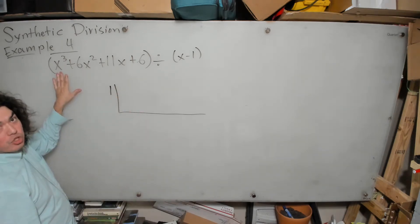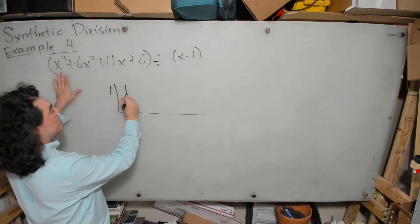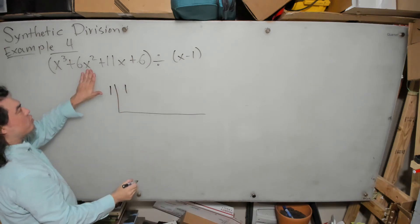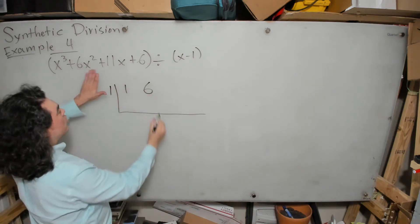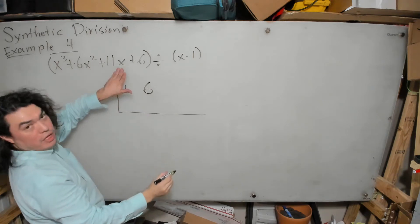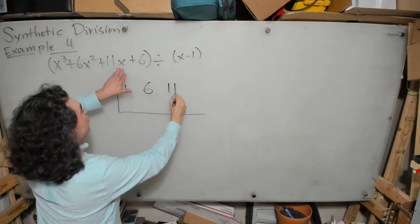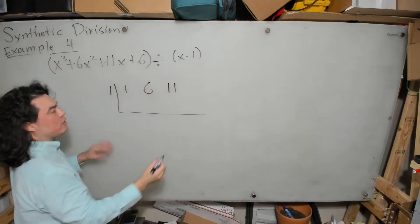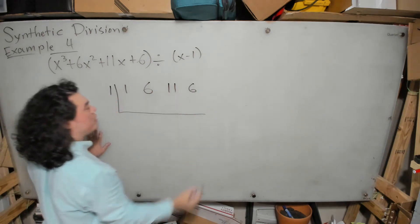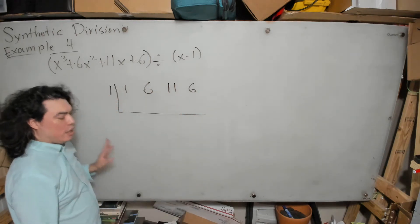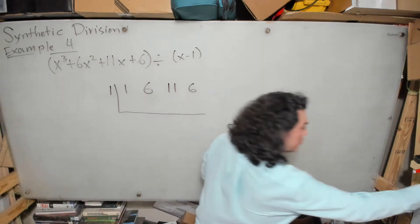So we can just list out the coefficients. The coefficient of x cubed is 1. The coefficient of the x squared term is 6. The coefficient of the x term is 11, and the constant term is 6. Now let us perform this division.